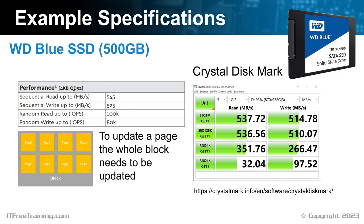You can understand why random access is slower than sequential access, because the pages containing the data may be spread all over the solid state drive in different blocks. The next test down is random access using 4 kilobyte blocks of data. Notice that the queue size is 32, meaning 32 different requests are being sent at once. When the solid state drive has a high number of requests, it is able to optimize these requests to get the best results. With write requests, the solid state drive can group a number of requests together so they fill up a single block. If there are a lot of free blocks, the speed will be quite fast. If there are no free blocks, the solid state drive will need to move data around to complete the request. This is why a solid state drive that is nearly full will not perform as well as one that has free space.